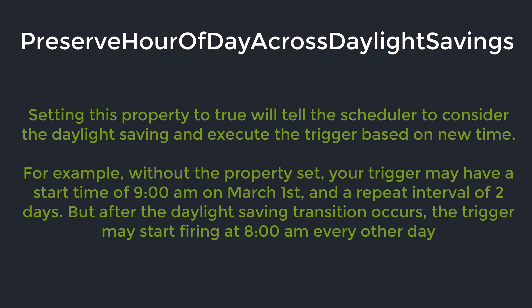For example, without the property set, your trigger may have a start time of 9 am on March 1st and a repeat interval of 2 days. But after the daylight saving transition occurs, the trigger may start firing at 8 am every other day. If we set this property to true, then the trigger will continue to fire at 9 am every other day. Set this property if it is important for you that the trigger starts at an exact time.